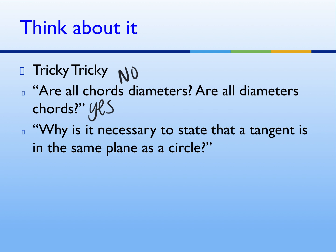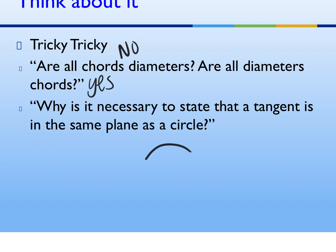Does anyone know why we need to state that a tangent must be in the same plane as a circle? Let's imagine my arm is a line. Is my arm currently tangent to the circle? No, because it's going to pass through twice. What about over here? How many times has my arm touched the circle? Once. But is my arm in the same plane as the circle? Is my arm still tangent? It sure is — it's only touching one time. Do you see how more complicated it becomes once I extend off the same plane?